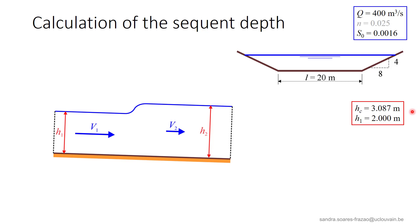If we consider a hydraulic jump with an upstream depth h1 equal to 2 meters, what will be the downstream depth h2?